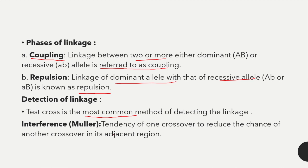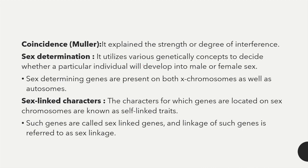The next term is interference, introduced by Muller — the tendency of one crossover to reduce the chance of another crossover in its adjacent region is called interference. The next term is coincidence, which explains the strength or degree of interference.